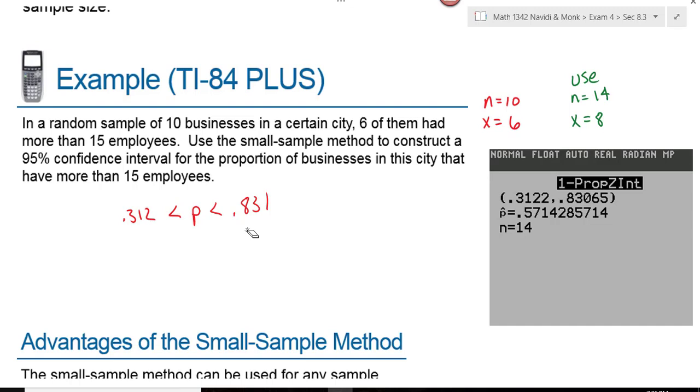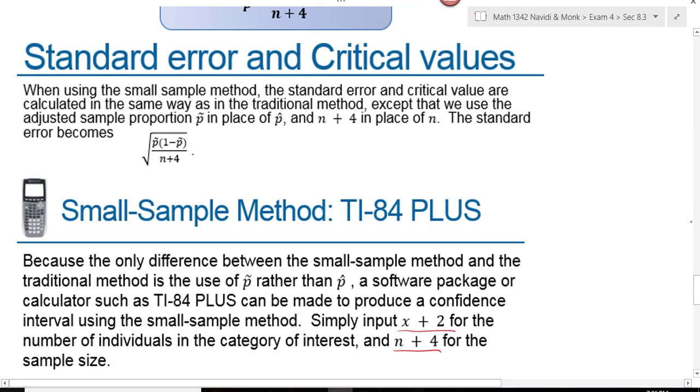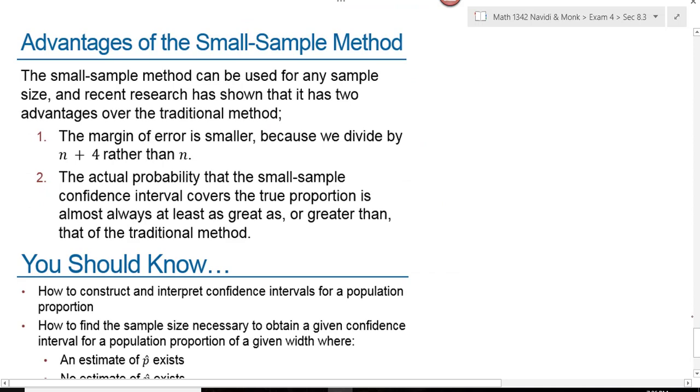Do you see how that is not very useful because that confidence interval is so wide? We would need to increase our sample size in order to get that to narrow down some. The advantages of the small sample method is that it works, and it actually works just as well as the other method.